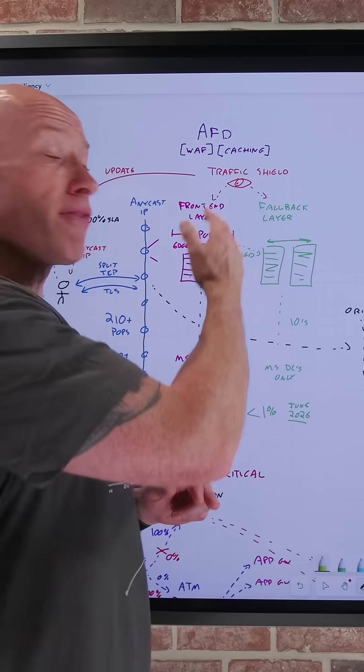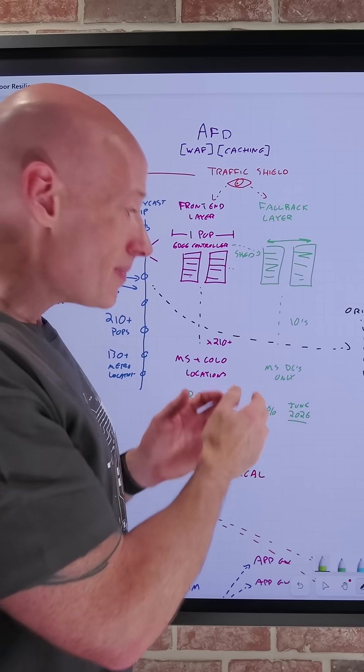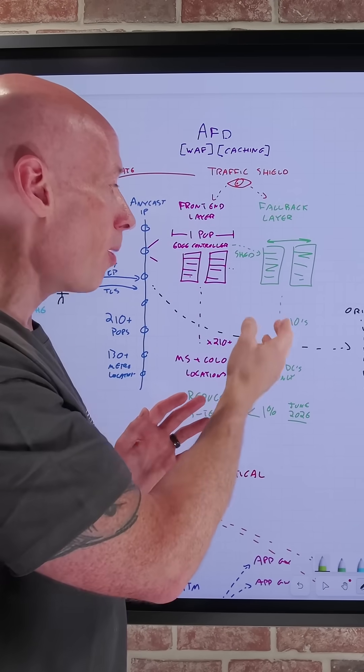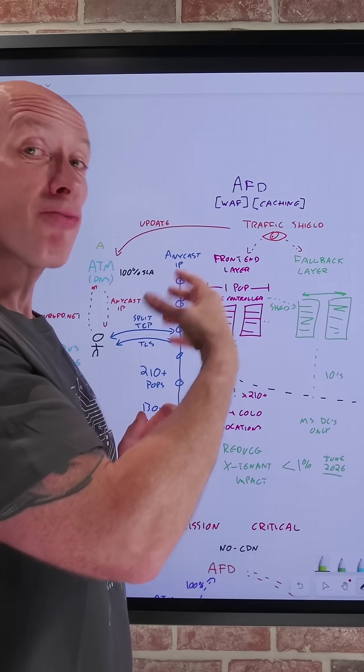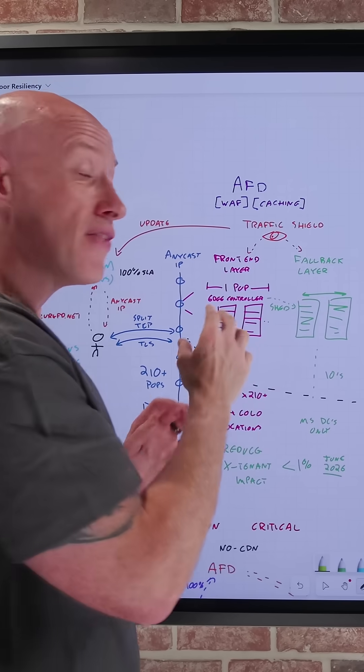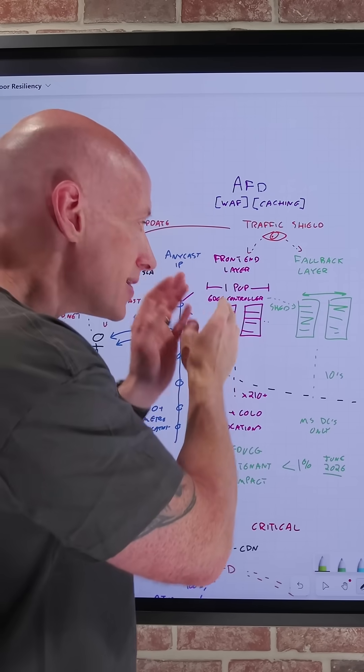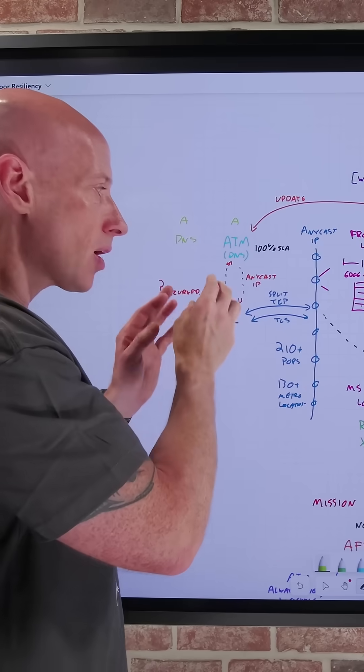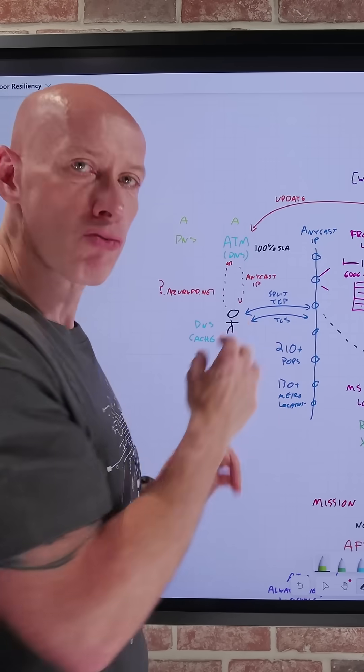If that layer has problems, it has a fallback layer spread over tens of Microsoft data centers that can also handle traffic if there's a problem. And it has a third layer of resiliency, the traffic shield, that if it detects certain sets of this infrastructure having problems handling it, it can update how clients are being routed to another regional set.